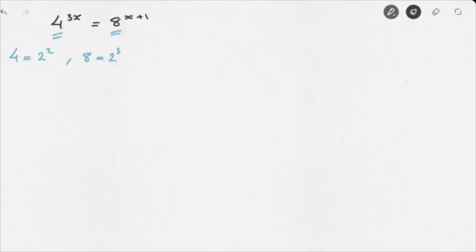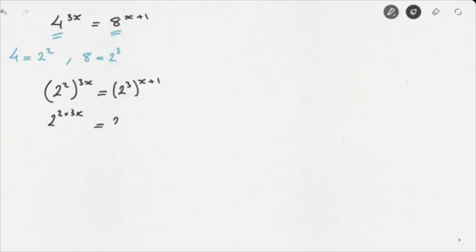If we replace 4 by 2 to the power of 2 and 8 by 2 to the power of 3, the equation becomes 2 to the power of 2 raised to the power of 3x, equals 2 to the power of 3 raised to the power of x plus 1. Simplifying this gives us 2 raised to the power of 2 times 3x, equals 2 raised to the power of 3 times (x plus 1), which further simplifies to 2 raised to the power of 6x equals 2 raised to the power of 3x plus 3.